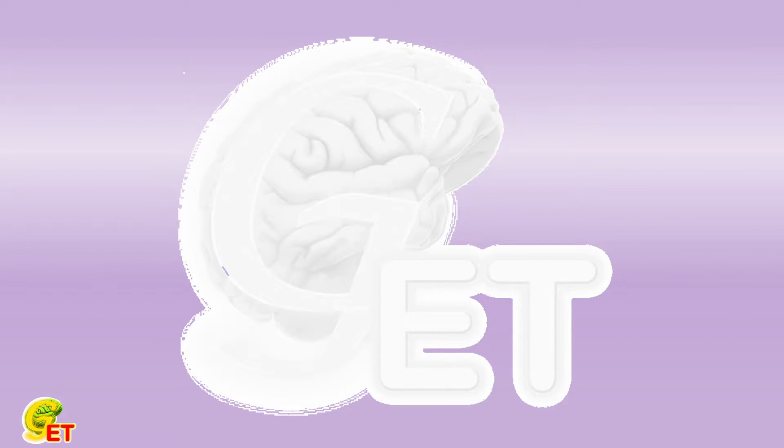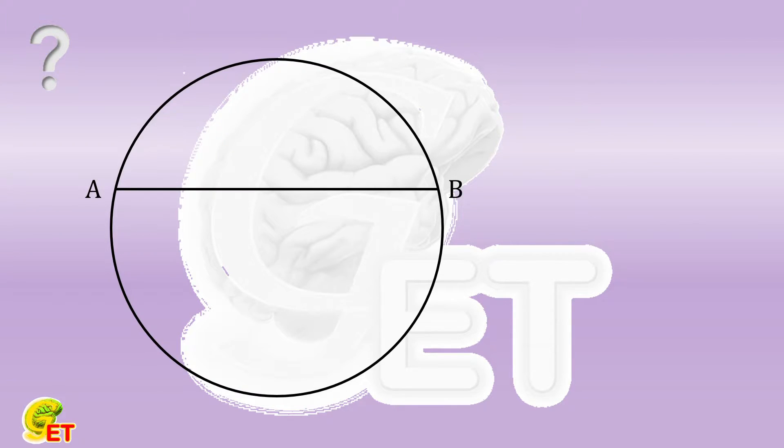Hello, my friends. Thank you very much for subscribing to our channel. AB is a chord of a circle. Its length is 12. The diameter CD is perpendicular to this chord at point E.